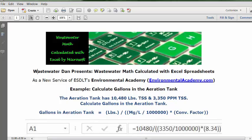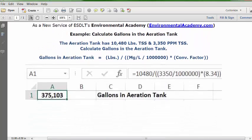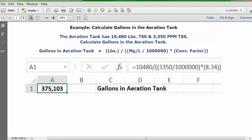Let's insert this in an Excel spreadsheet. Open a blank spreadsheet, put your cursor in C1 and type the description 'gallons in aeration tank'. Put your cursor in A1 and format it as whole numbers with zero decimals, commas for every thousand, bold and centered.